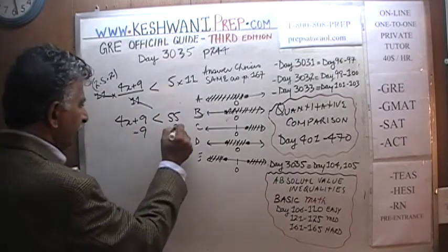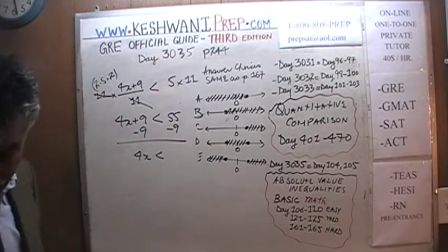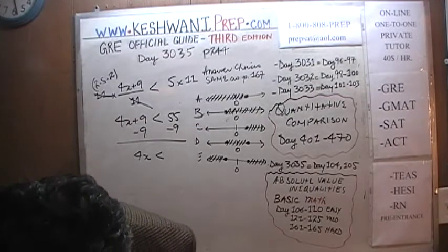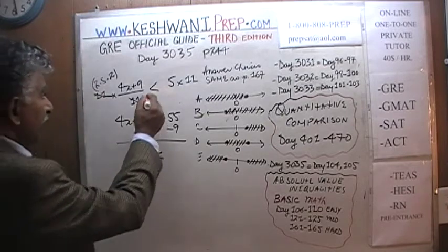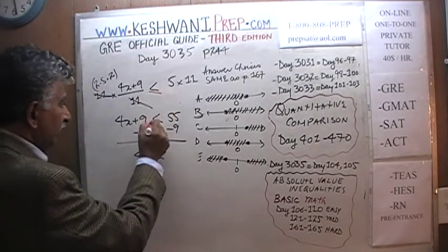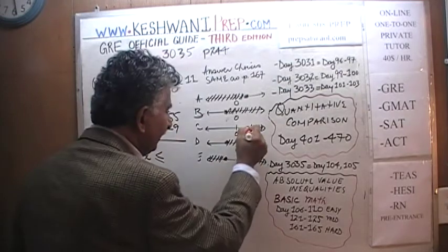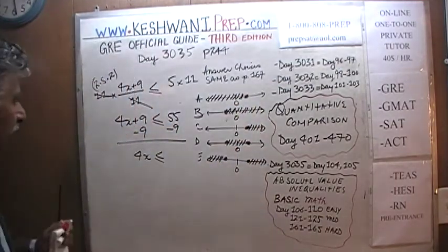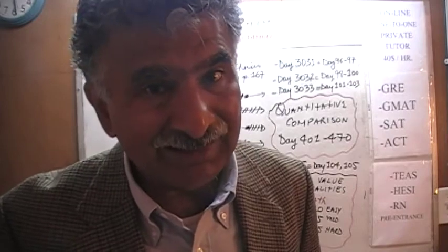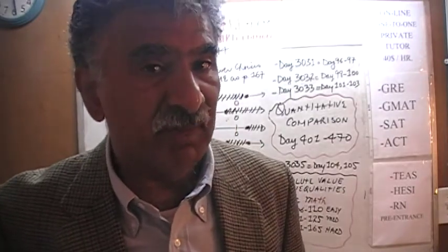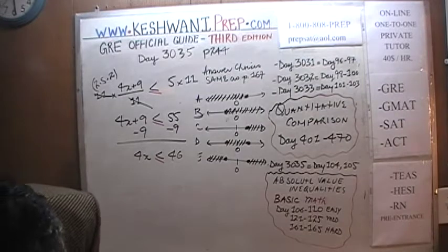We need to get rid of 9, so we subtract 9 from both sides. The circles in the answer choices are all closed, so we'll use less than or equal to. Now, 55 minus 9: I know 55 minus 10 would be 45, so 55 minus 9 is 46. That's a somewhat peculiar answer, but it is 46.